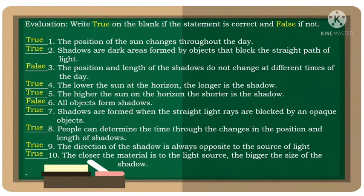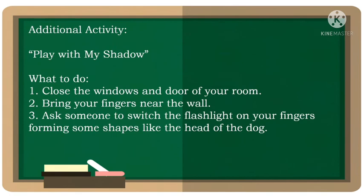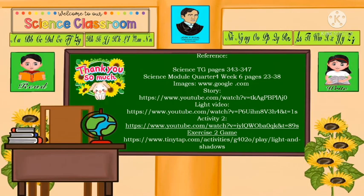Now, you can check your answers. For your additional activity, you can play with your shadow. What to do? 1. Close the windows and door of your room. 2. Bring your fingers near the wall. 3. Ask someone to shine the flashlight on your fingers, forming some shapes like the head of a dog. This is the end of our lesson. Thank you so much. Goodbye, class!